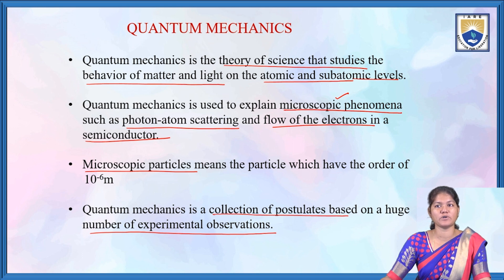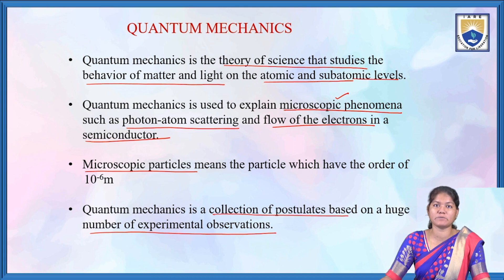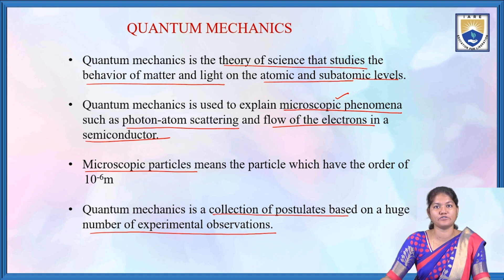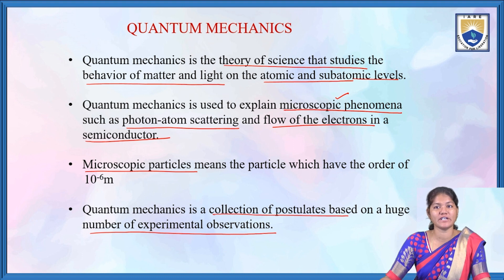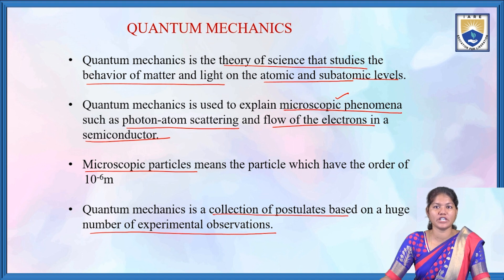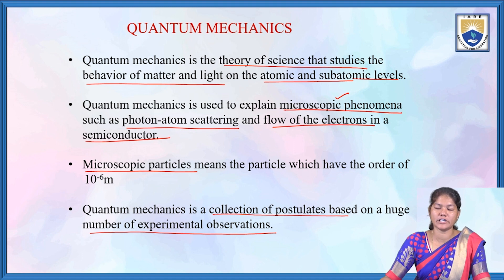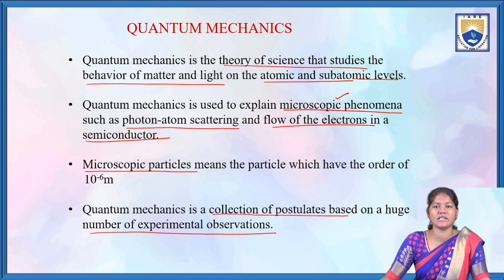These experimental observations include black body radiation, Compton effect, and photoelectric effect — so many experimental observations. Quantum mechanics is a collection of postulates based on a huge number of such experimental observations.